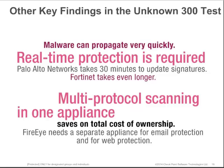If a simple test could find these vulnerabilities, think what a focused, well-funded cybercriminal could leverage to get inside your network. Palo Alto takes 30 minutes to update its signatures, and Fortinet takes even longer. With the speed of malware propagation, 30 minutes might as well be forever. Checkpoint updates in real time, closing possible vulnerabilities to your network as soon as they're known. We also noted that FireEye needs a separate appliance for email and web protection — that's two appliances to buy, two to manage, two to maintain. With Checkpoint, multiple protocol scanning is accomplished in one device or one gateway.